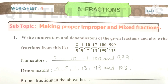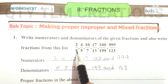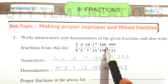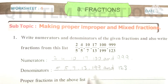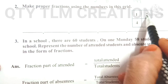Fractions having a numerator less than the denominator are called proper fractions. So 2/5, 4/5, and 100/199 are proper fractions. Second question: make proper fractions using the numbers in this grid.